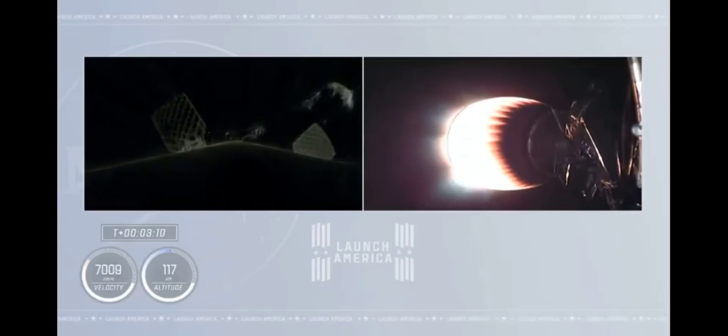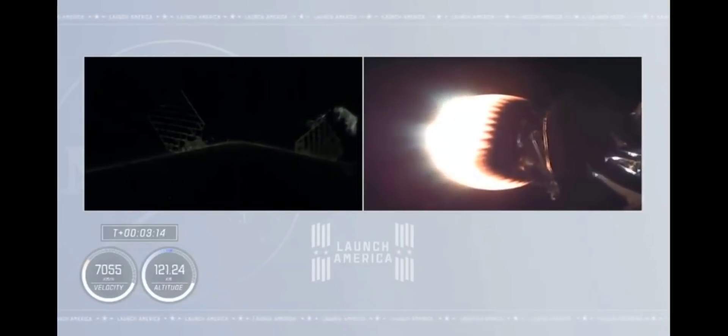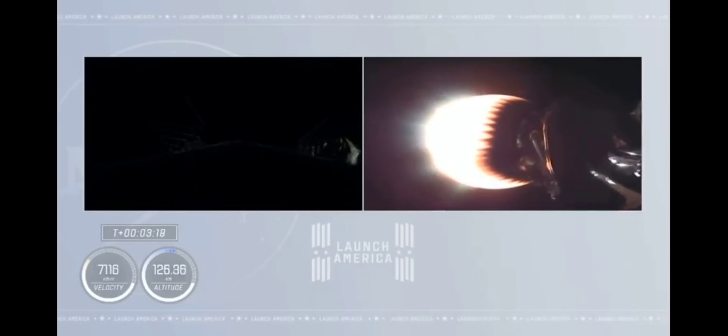On the right side of your screen, you see stage 2 continuing to burn. Over on the left-hand side is stage 1 preparing for its return to Earth. Currently on the left side, you can't make out much. It's a couple hours after sunset in Florida, but the grid fins have deployed on the first stage. The first stage is now unpowered, but with the velocity ahead, it continues to coast up to an apogee before it begins to descend back into Earth's atmosphere.